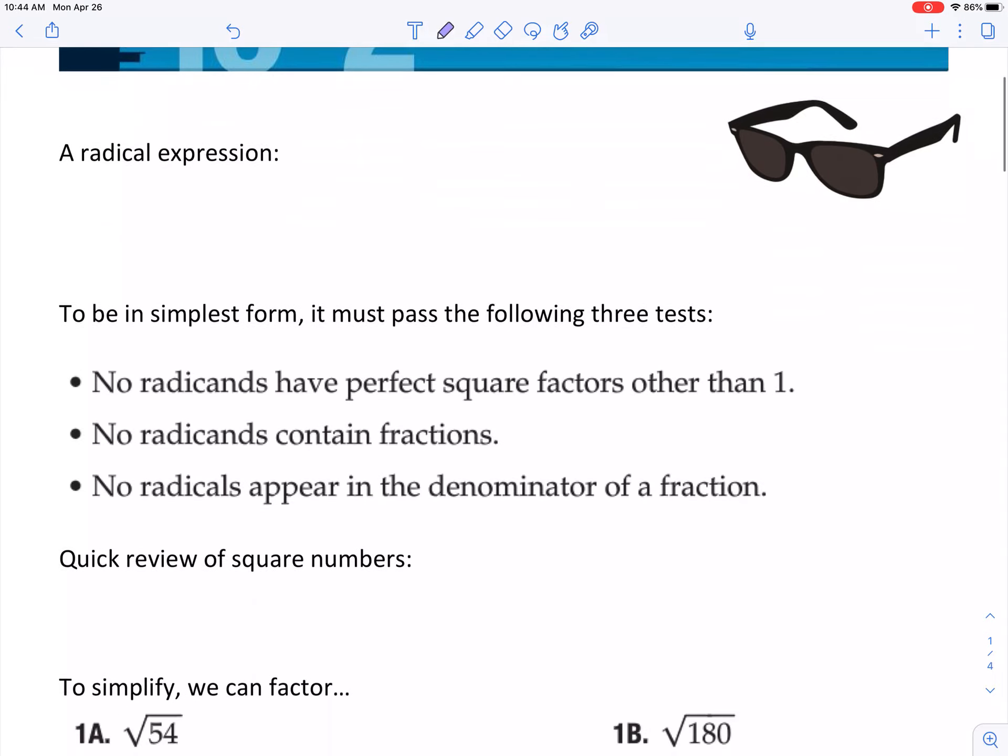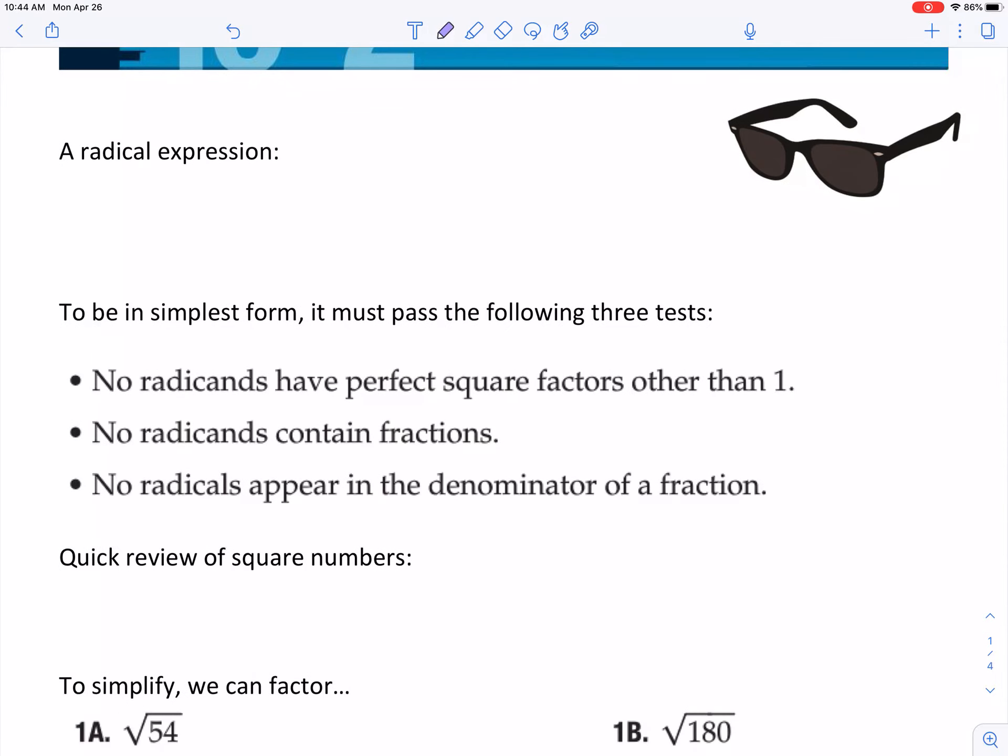So a couple rules we have to follow. No radicands—by the way, radicand is the stuff underneath a radical sign—have perfect square factors other than 1. That's confusing to explain. We're going to do some examples to show that. No radicands, again the stuff underneath the radical sign, can contain fractions.